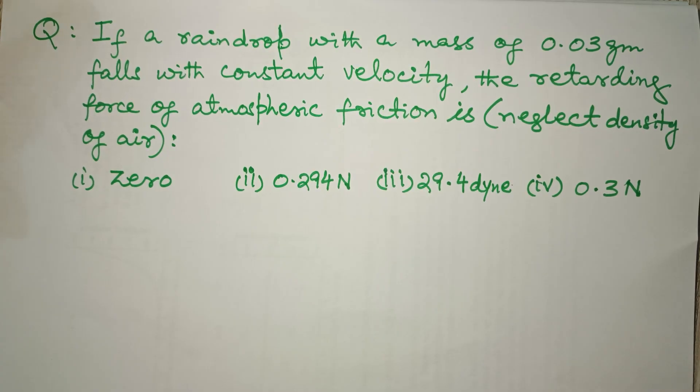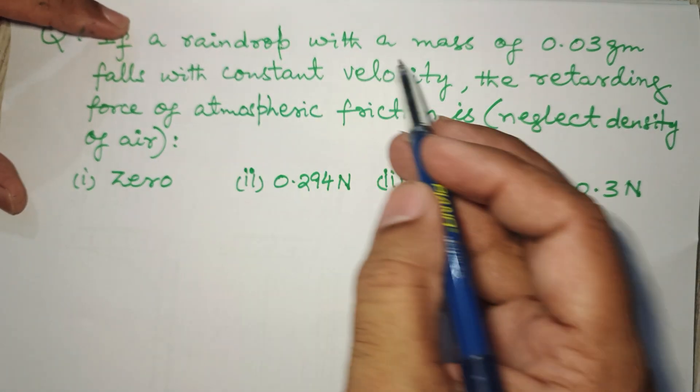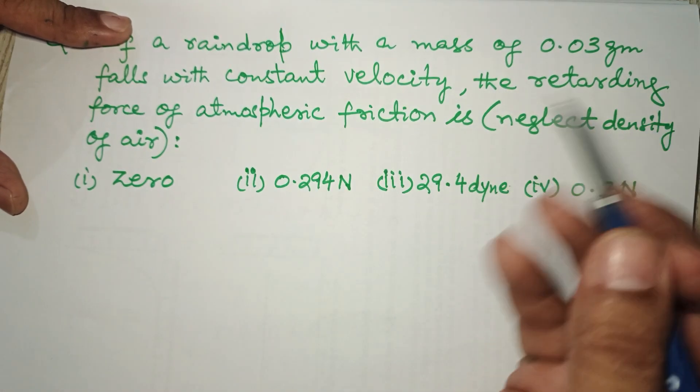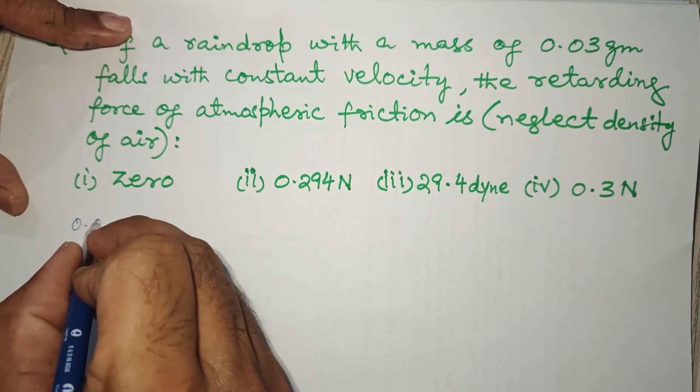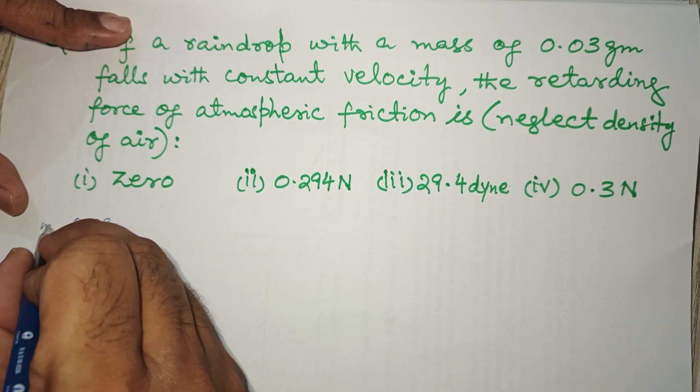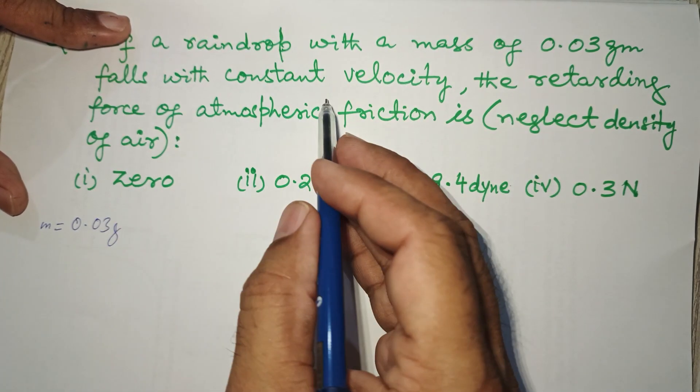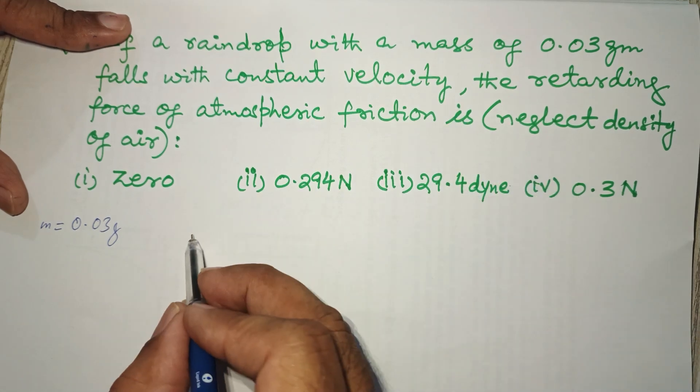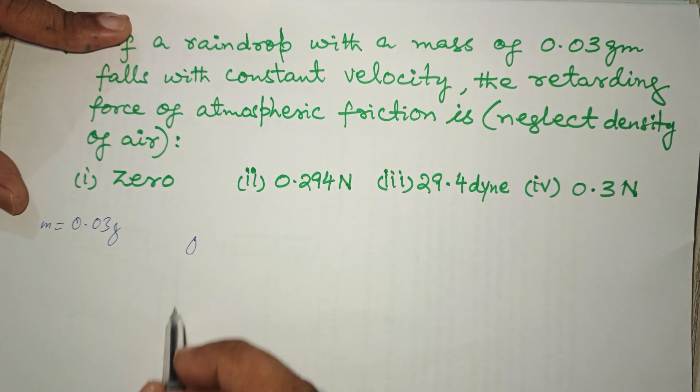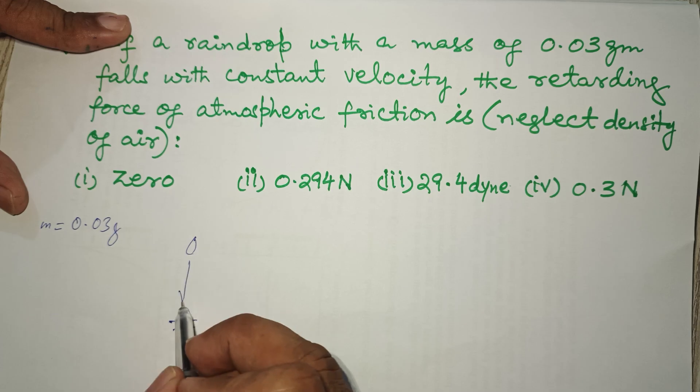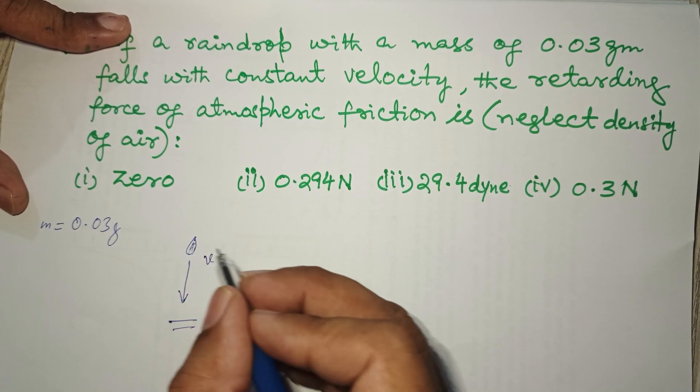If a raindrop with a mass of 0.03 grams falls with constant velocity, the retarding force of atmospheric friction is...